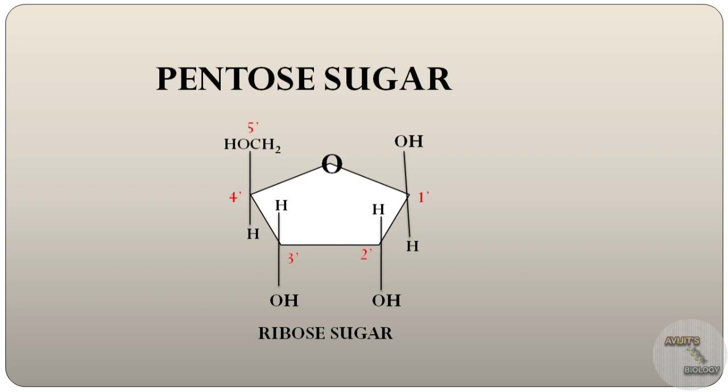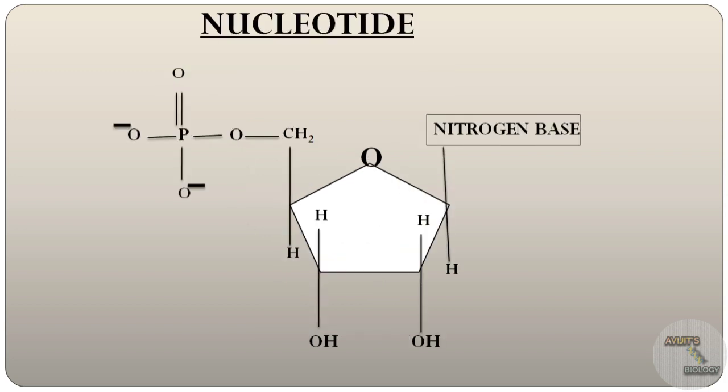Now when a nitrogenous base and a phosphate group is added to the ribose sugar, then it is called the ribonucleotide, or it is the nucleotide of ribonucleic acid. So this is the structure of the nucleotide of RNA.